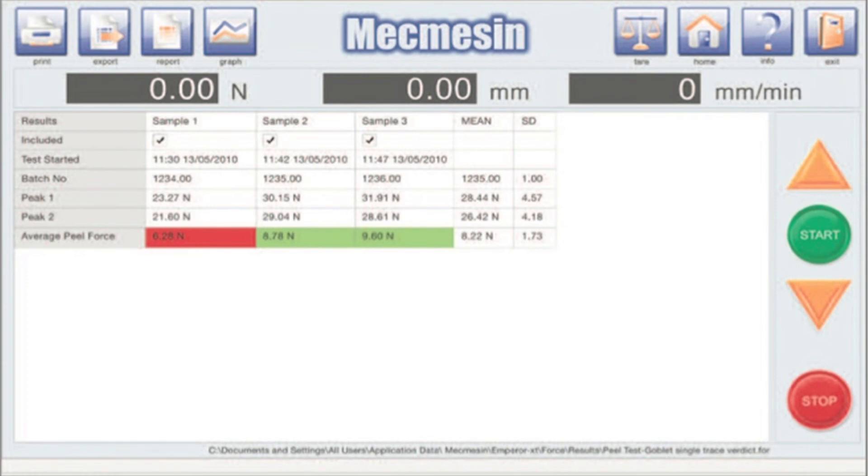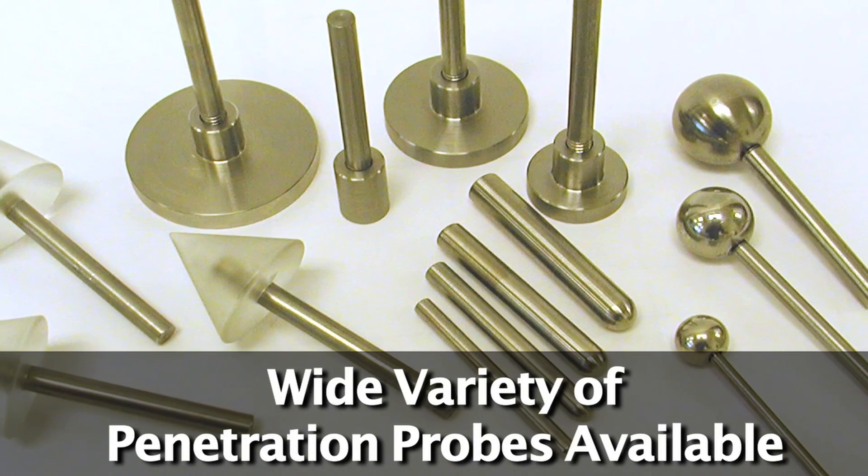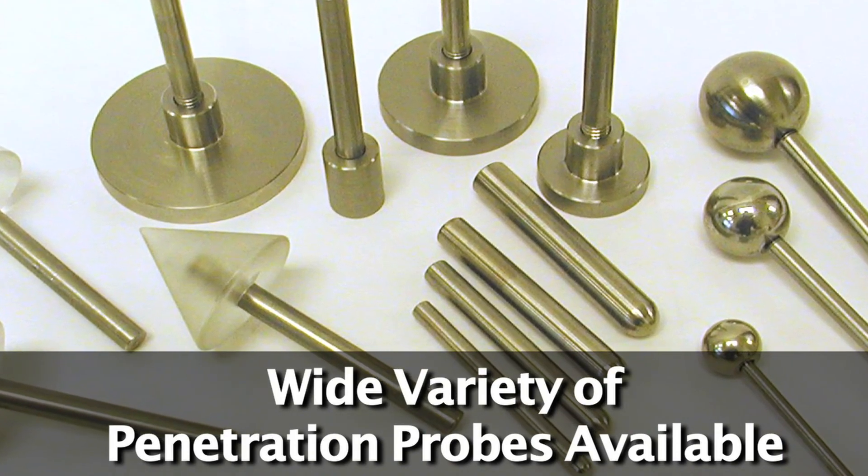Raw data can be exported directly to Microsoft Excel. Both the Mecmesin FTAi and XT models can be fitted with a wide variety of probes for food testing.